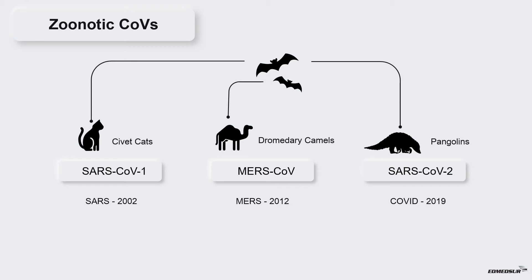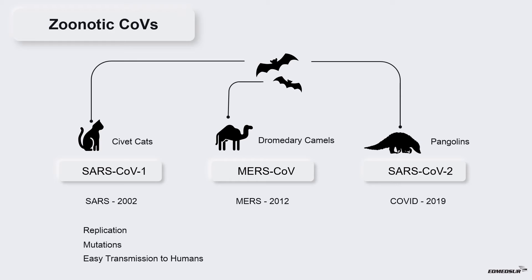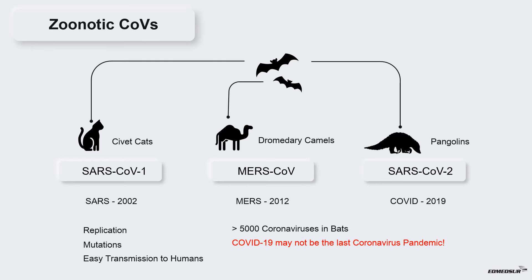However, the origin of COVID-19 still remains controversial. It is believed that after the virus jumped from bats to these intermediate hosts, it underwent some rounds of replication. In the process, it acquired a few mutations which allowed the virus to more easily transmit to the human population. These are not the only coronaviruses found in bats — it has been estimated that the number of unknown bat coronaviruses exceeds 5,000. This suggests that the current pandemic of COVID-19 may not be the last coronavirus pandemic.